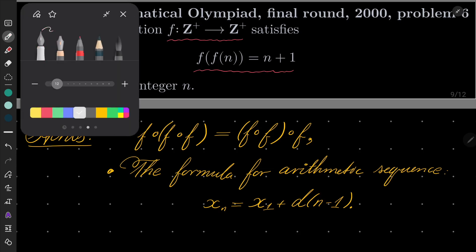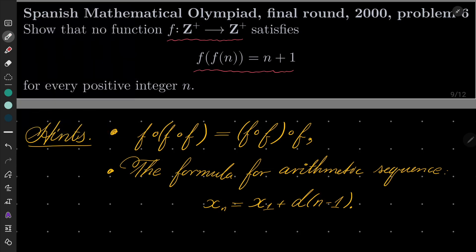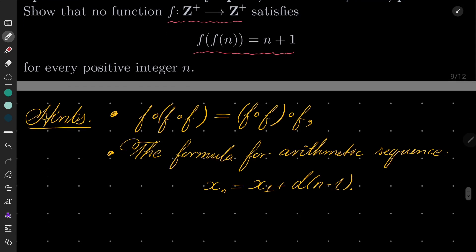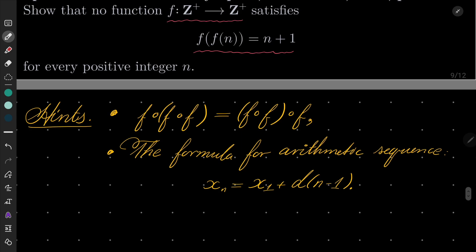My hints for this problem: First of all, it is very important to notice that the composition of functions is associative. In other words, when we compose several functions, we can put parentheses in any place we wish. Also along the way, an arithmetic progression should appear, and we have an explicit formula for arithmetic progressions. Give this problem a try and I will see you in a moment.